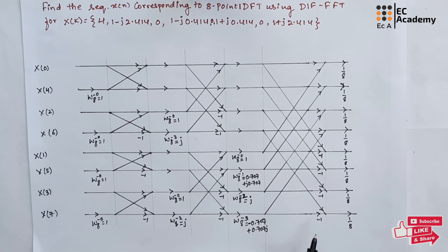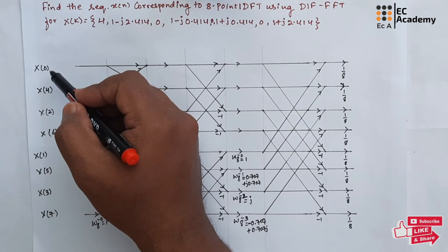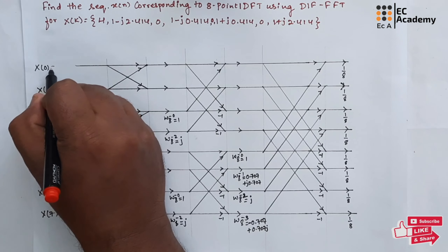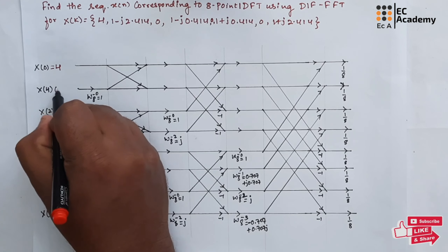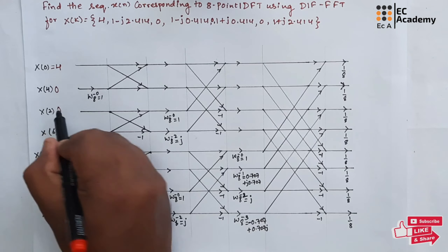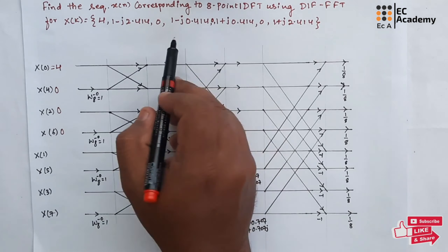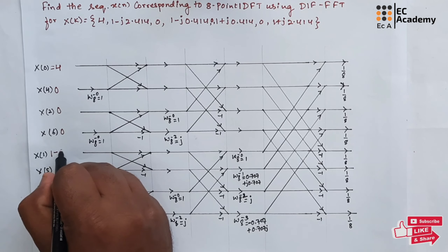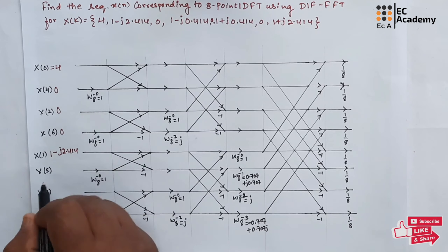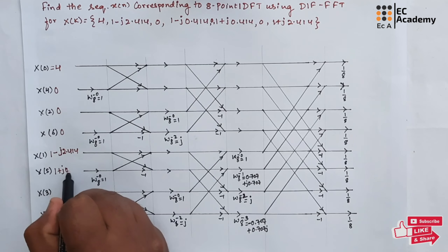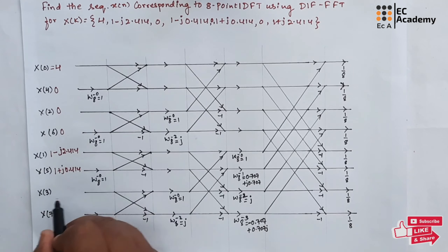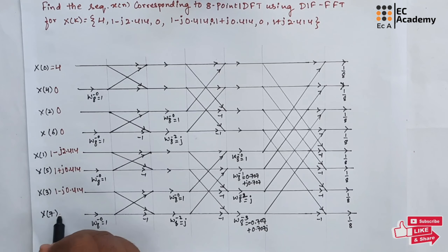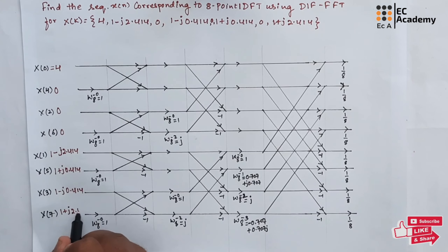Once you write the flow graph or butterfly diagram, first write the values of x of 0 up to x of 7. x of 0 is 4, x of 4 is 0, x of 2 is 0, x of 6 is 0. So you can use this sequence to write these values: x of 1 is 1 minus j2.414, x of 5 is 1 plus j0.414, x of 3 is 1 minus j0.414, x of 7 is 1 plus j2.414.